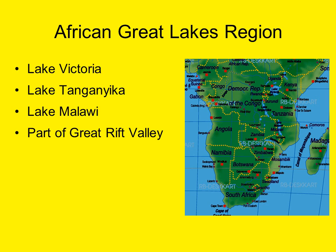The African Great Lakes region is important for a number of reasons, not least as a supply of fresh water for eastern and central Africa. The biggest lakes are Lake Victoria — the second largest freshwater lake in the world in terms of surface area — Lake Tanganyika, the second largest lake in the world in terms of volume, and Lake Malawi. These are the largest of the Great Lakes, but there are hundreds of them, some very small, and they are part of what is known as the Great Rift Valley.